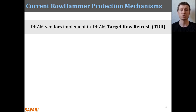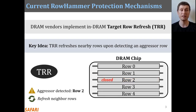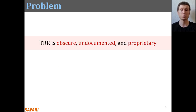To protect their DRAM chips against rowhammer, DRAM vendors currently implement rowhammer mitigation mechanisms typically called target row refresh, or TRR. The key idea of TRR is to refresh nearby rows upon detecting an aggressive row. However, different vendors implement TRR differently and the exact operation of this TRR mechanism is unknown.